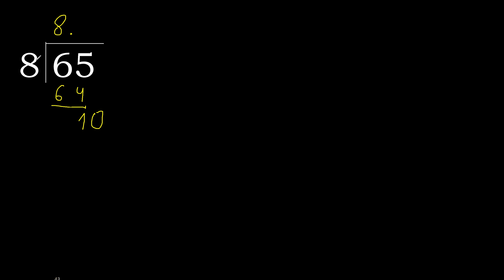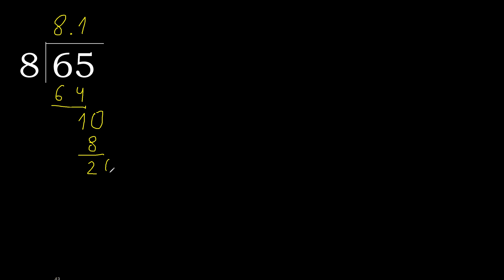8 multiplied by 2 is 16, which is greater. Multiply by 1: 8 is not greater. Subtract — complete. Complete point. Bring down a 0 — we now have 20.